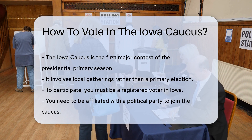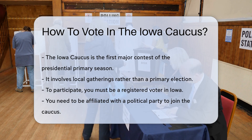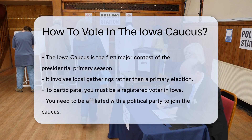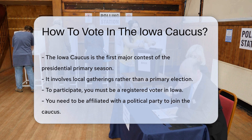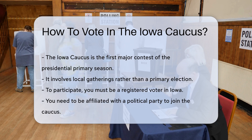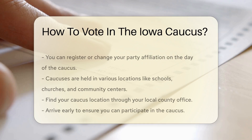Unlike a primary, it involves local gatherings. To participate, you must be a registered voter in Iowa. You also need to be affiliated with a political party. You can register or change party affiliation on the day of the caucus.